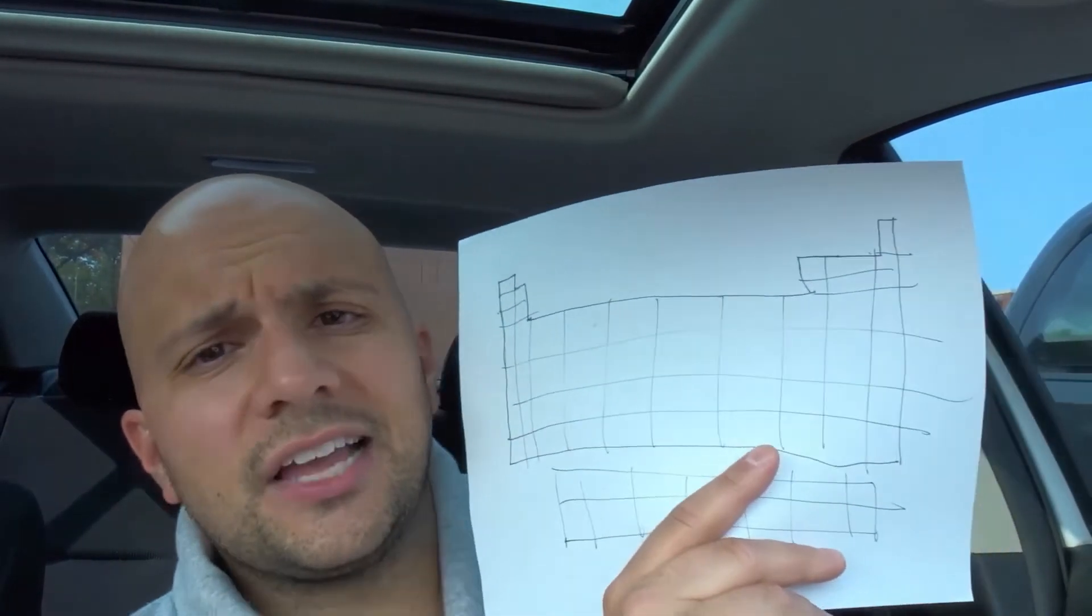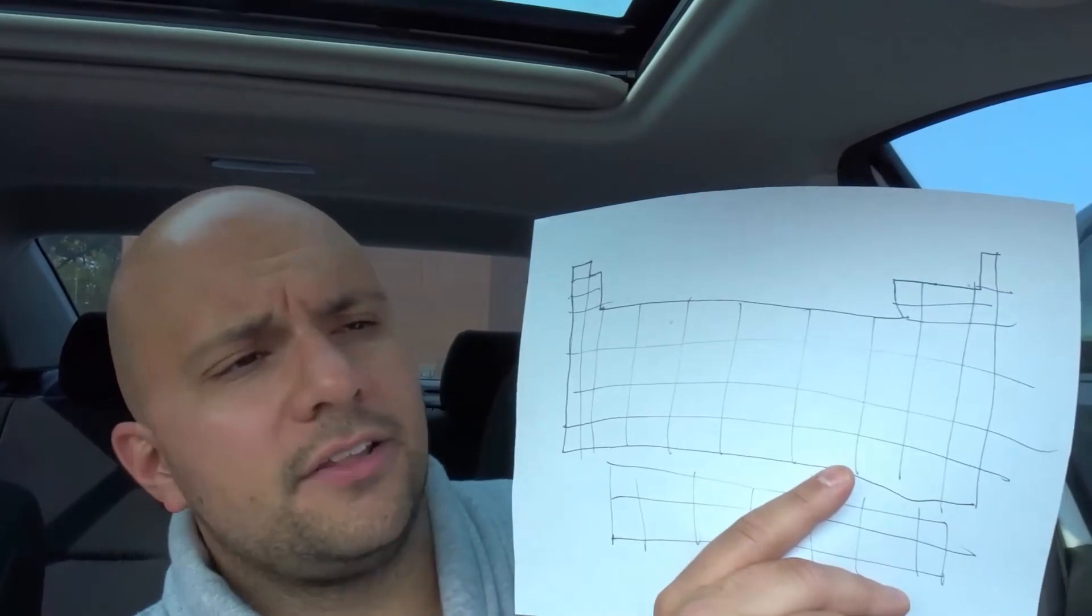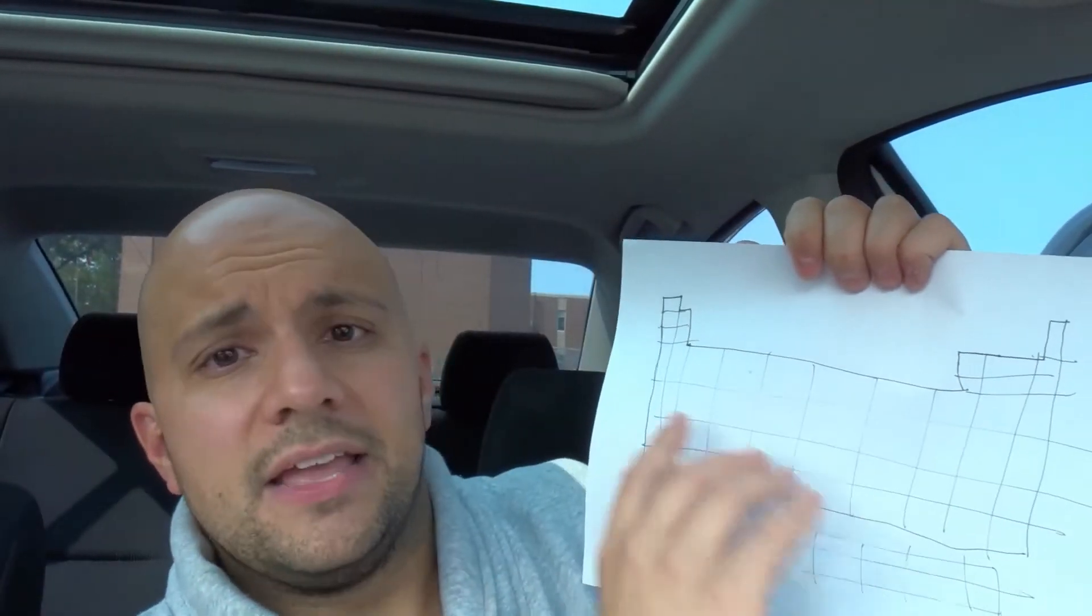Stop doing the progressive memorization and go study those five that you're struggling with. Study their locations, study their short form, study their numbers, study their name. Visualize it. Study them, then try again.